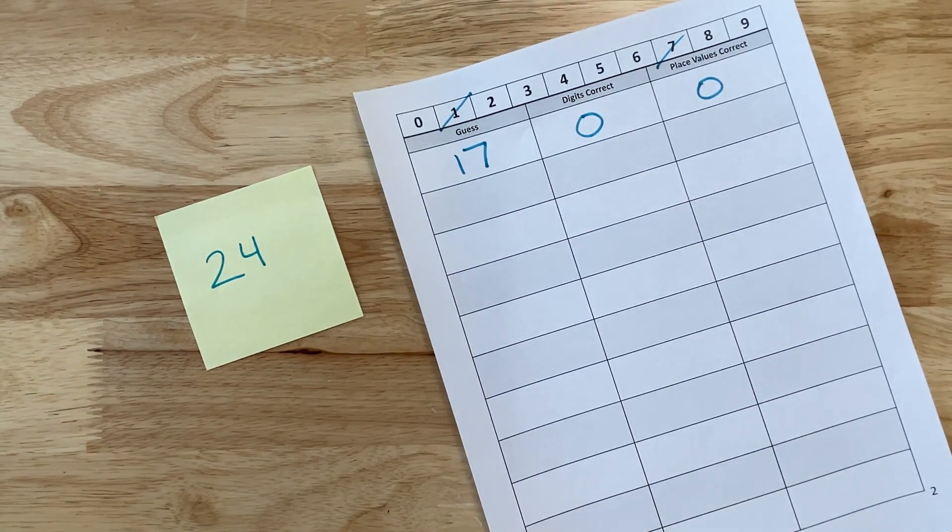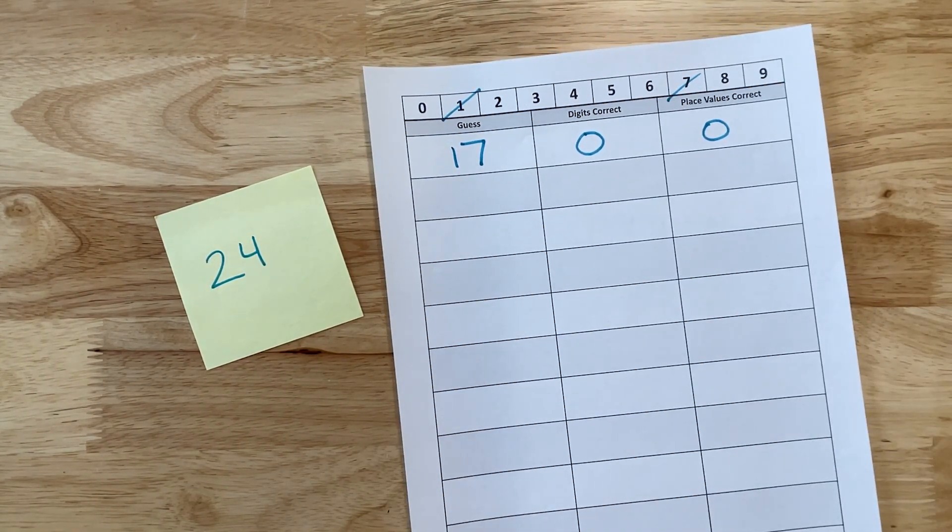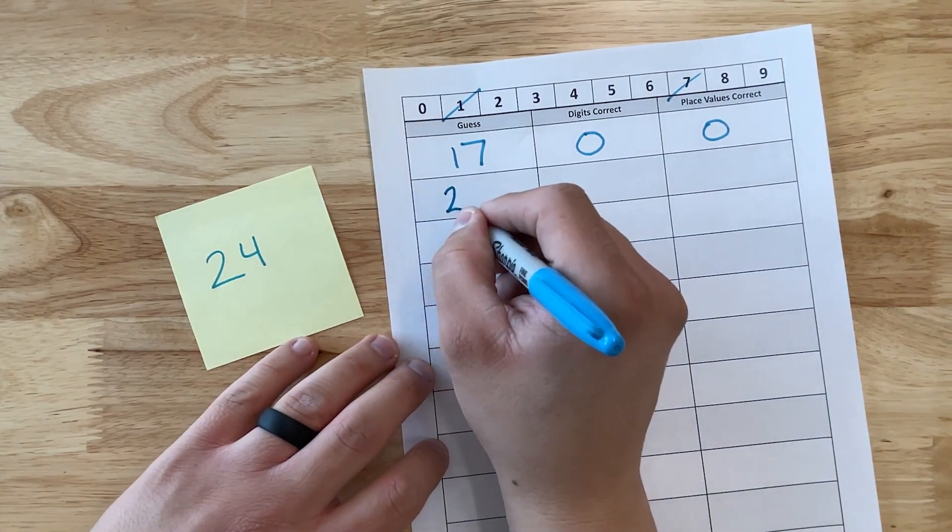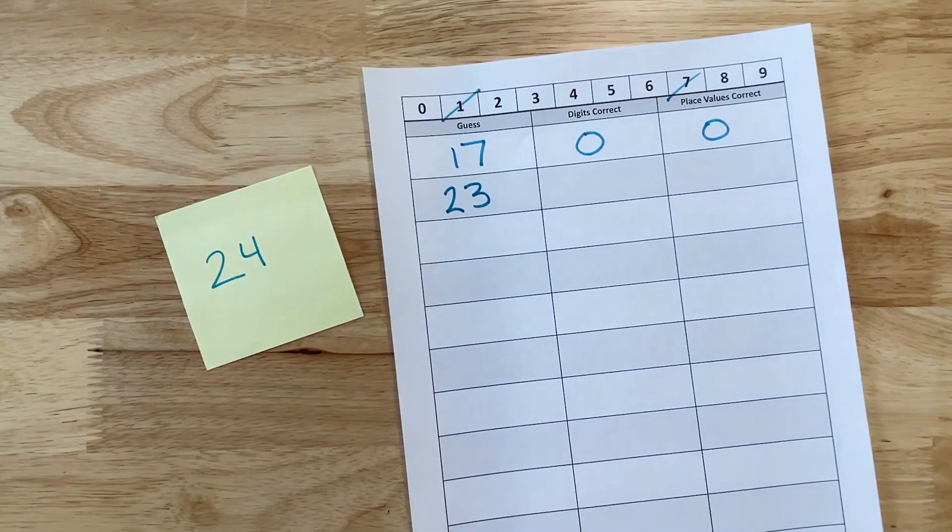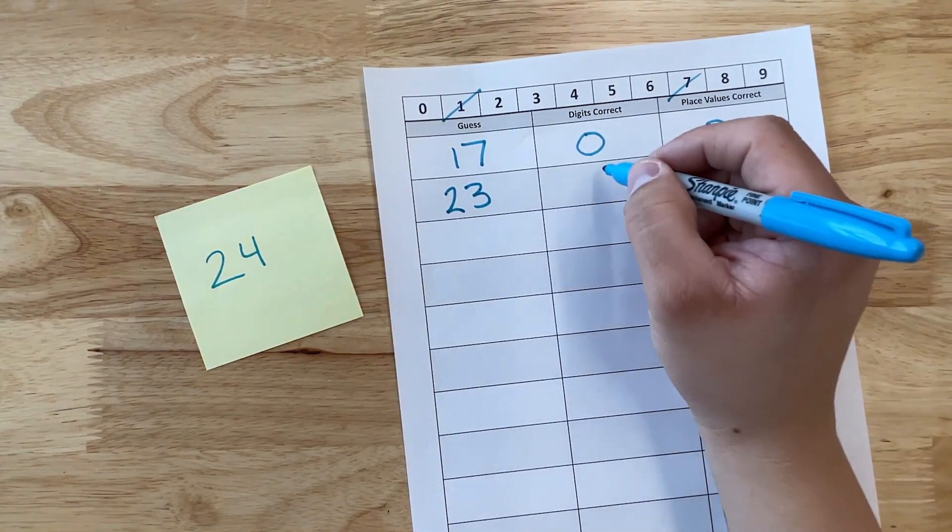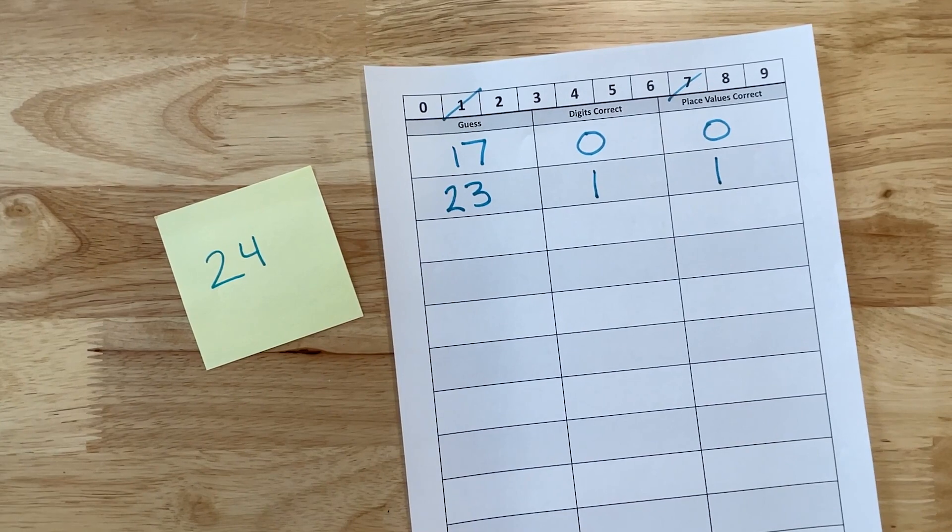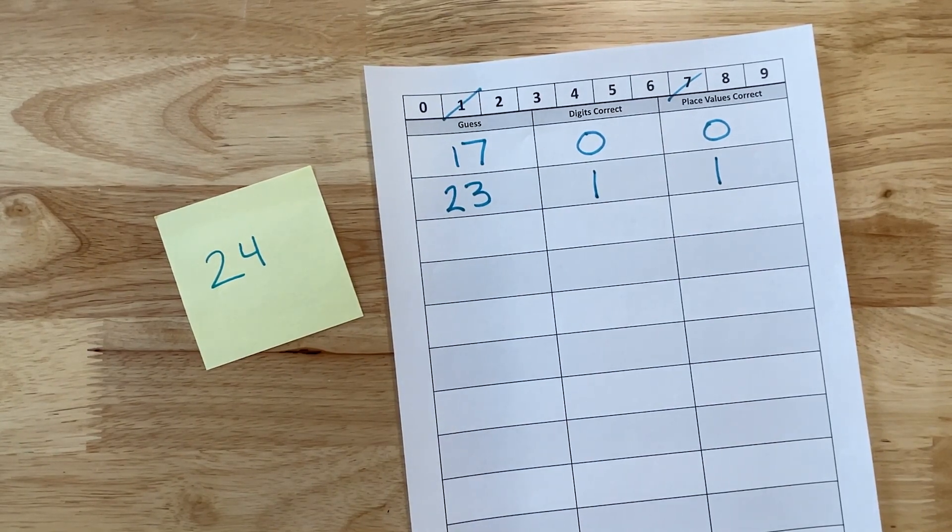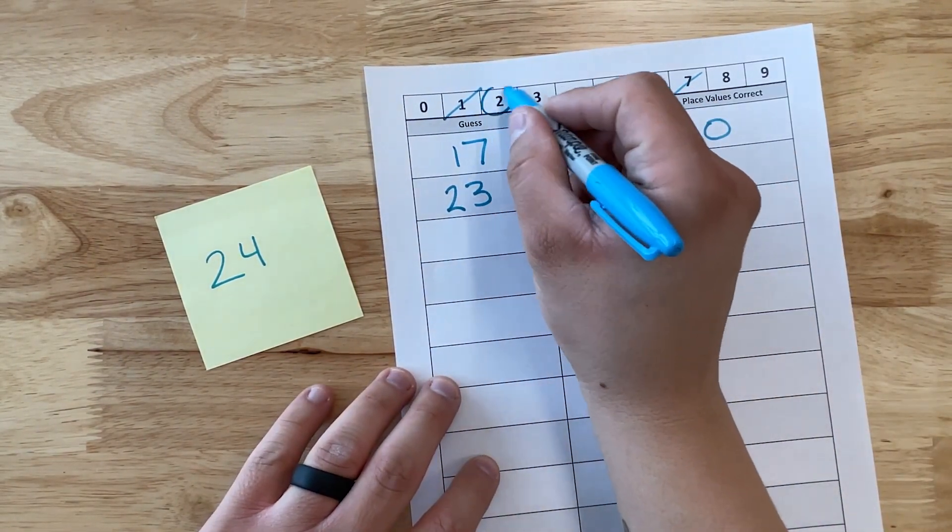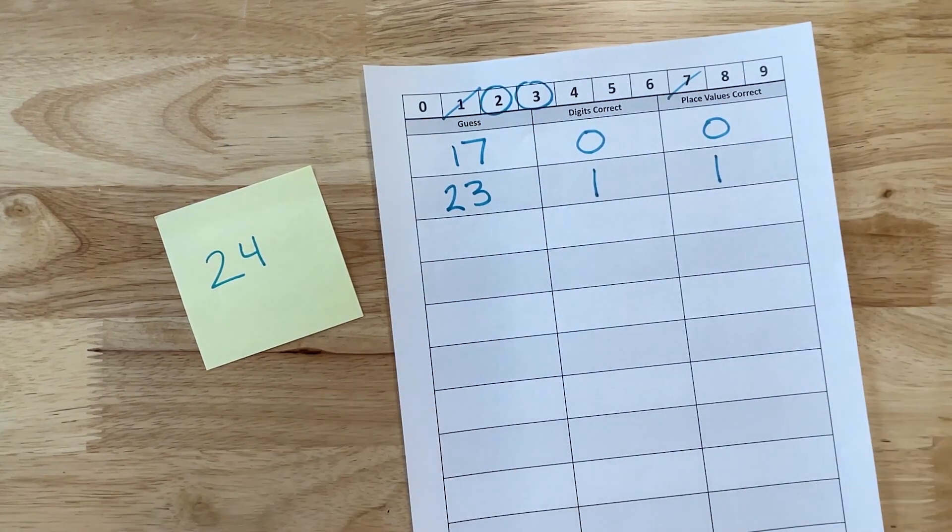Next, we're going to say another student or group says 23. Well, here we see that we have one correct digit. So we're going to say one digit is correct, and it's also in the correct place value. We're getting closer. Tell students to circle the two and the three. This is going to tell them these are digits that could possibly be in our number.